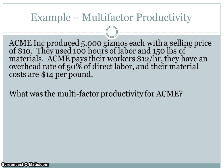Let's do an example of multi-factor productivity. Assume that Acme produced 5,000 gizmos each with a selling price of $10. They used 100 hours of total labor, 150 pounds of material, pay their workers $12 an hour, have an overhead rate of 50% of direct labor, and material costs are $14 per pound. Whenever we do multi-factor productivity, we convert everything into dollars, expressing labor, overhead, and material usage as inputs, with output being the 5,000 gizmos expressed at their selling price.